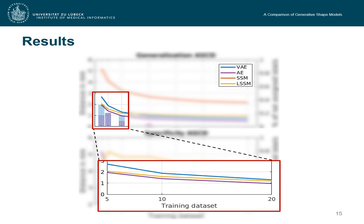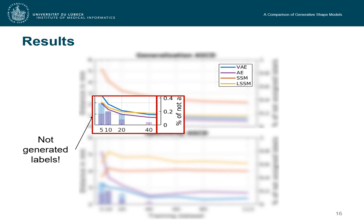However, an important detail to measure displays is that those bars, the purple and the blue ones, they correspond to the percentage of not generated labels of the deep learning methods. Because the training dataset size is so small that they are not able to learn all labels properly.